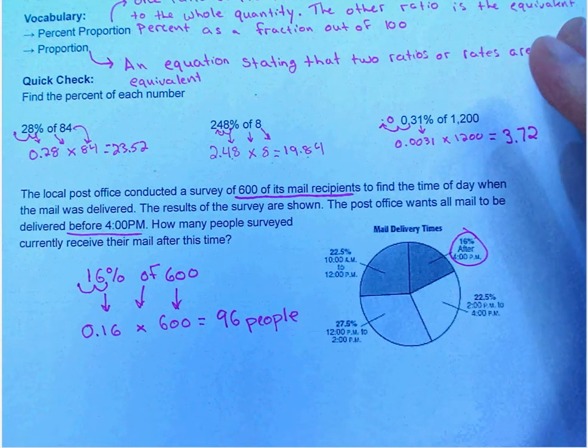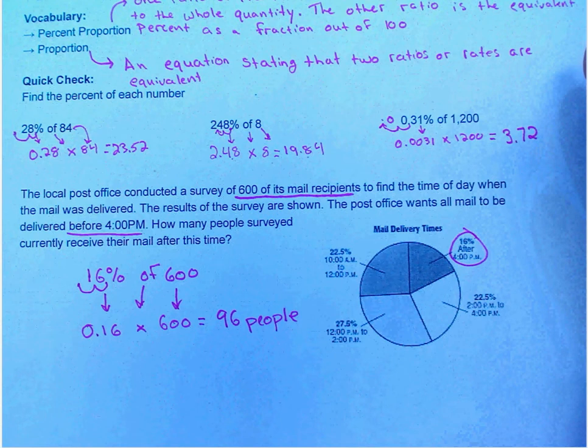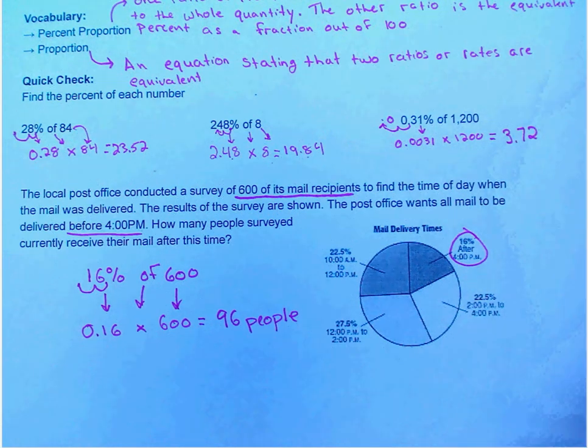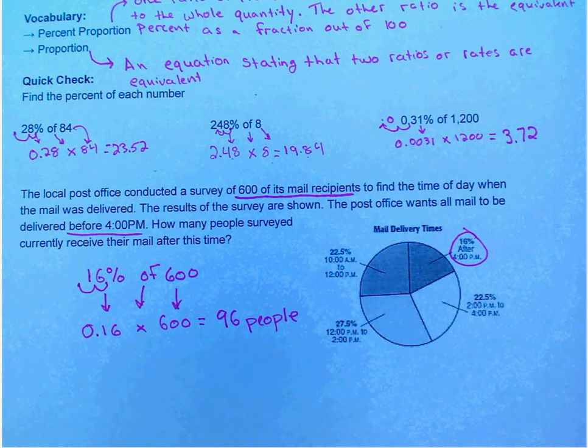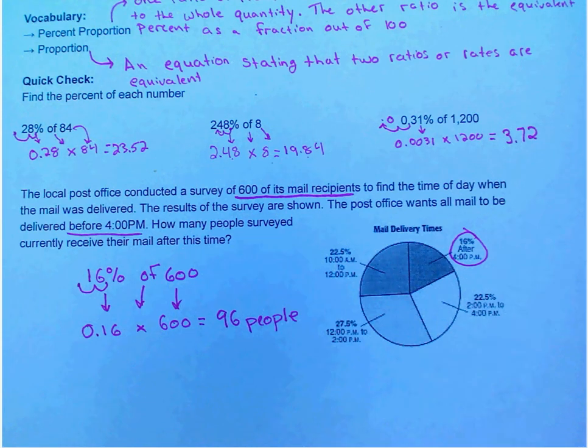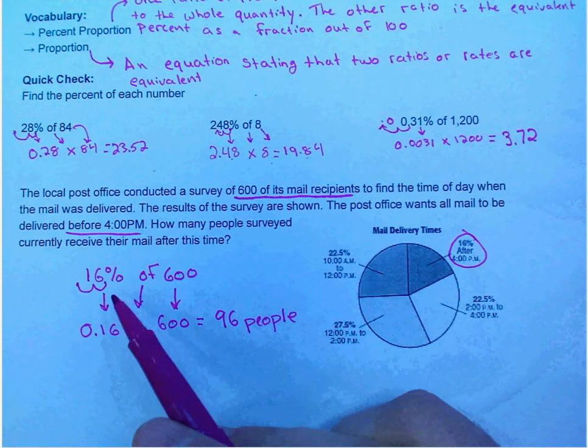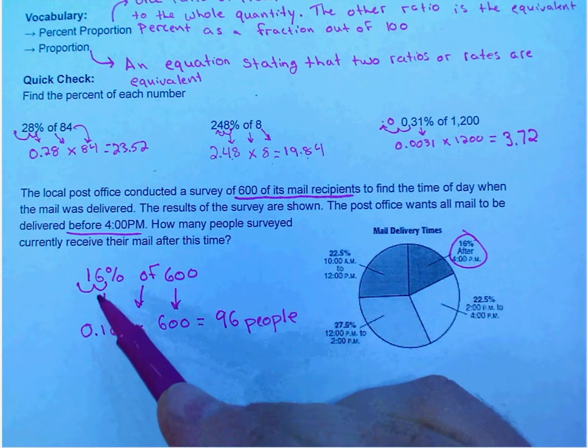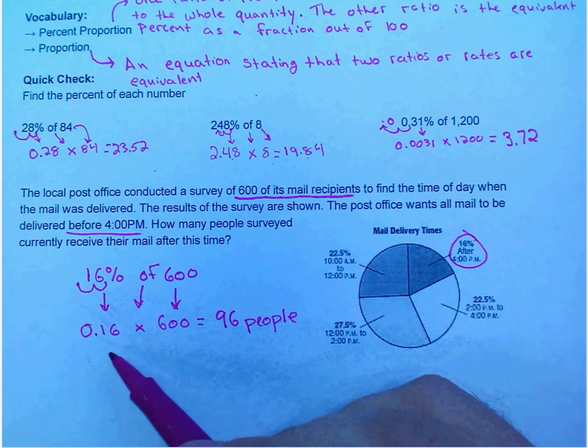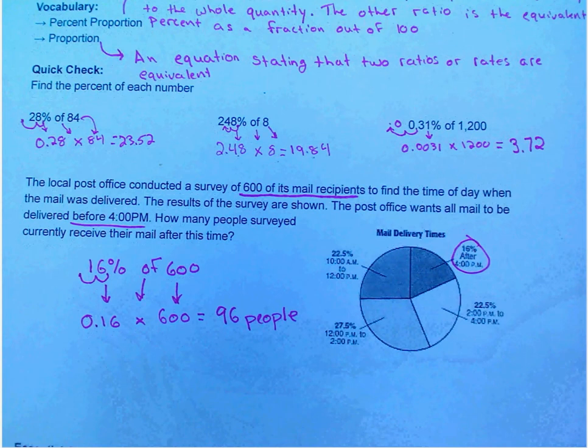The local post office conducted a survey of 600 of its mail recipients, so people who get mail, to find the time of day when the mail is delivered. The results of the survey are shown. The post office wants all mail to be delivered before 4 p.m. 16 percent get it after. So 16 percent of 600, move the decimal two places to the left and then multiply and we get 96 people.